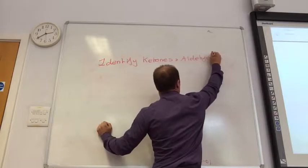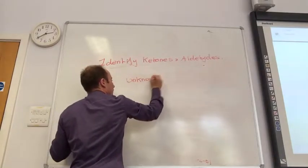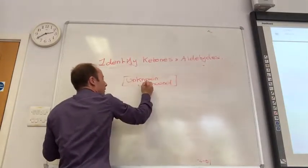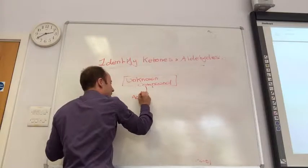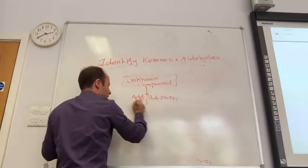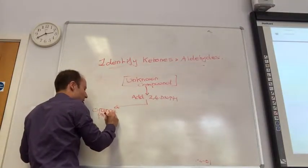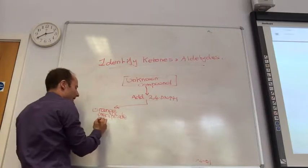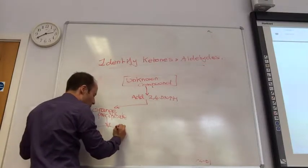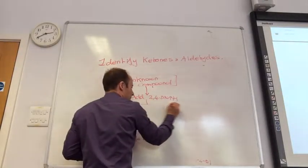So we're going to do a little table here. You start off with your unknown compound. The first thing I would do is I would add 2,4-dinitrophenylhydrazine. If I get an orange precipitate, remember precipitate is a key, you know you have got either a ketone or you have got an aldehyde. If it doesn't, it's something else.